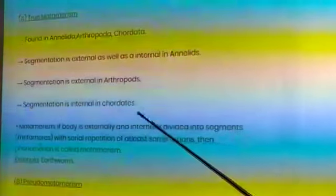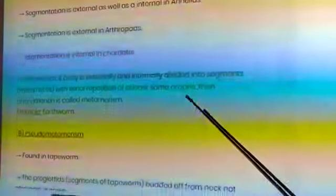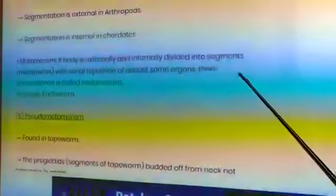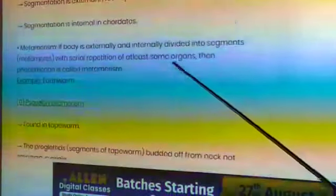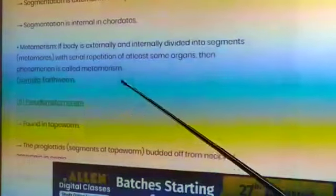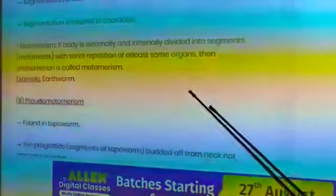Metamerism: if body is externally and internally divided into segments with serial repetition of attributes in some organs, then the phenomenon is called metamerism. Example: arthropods.